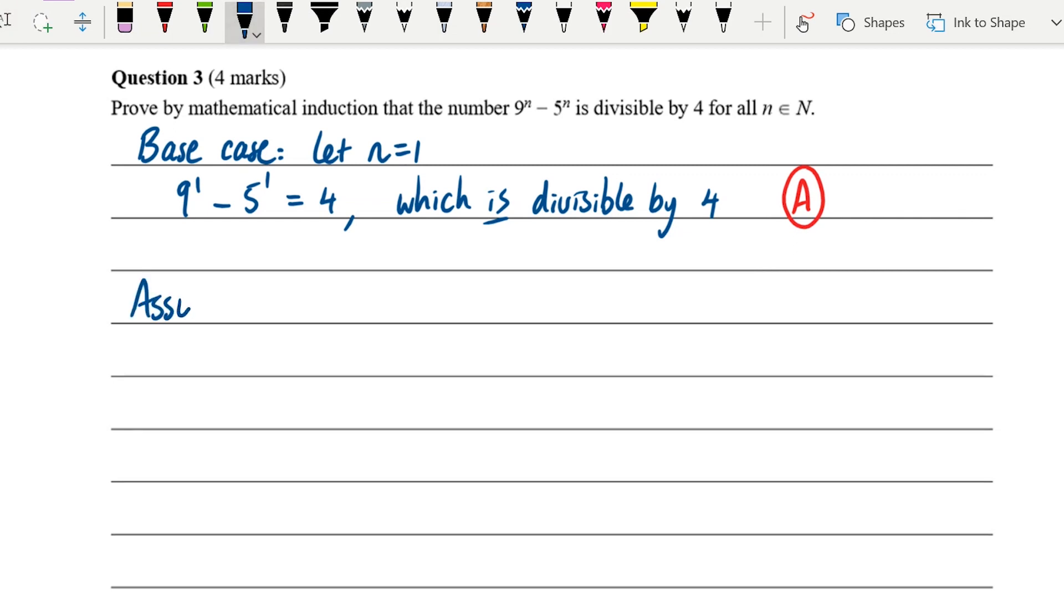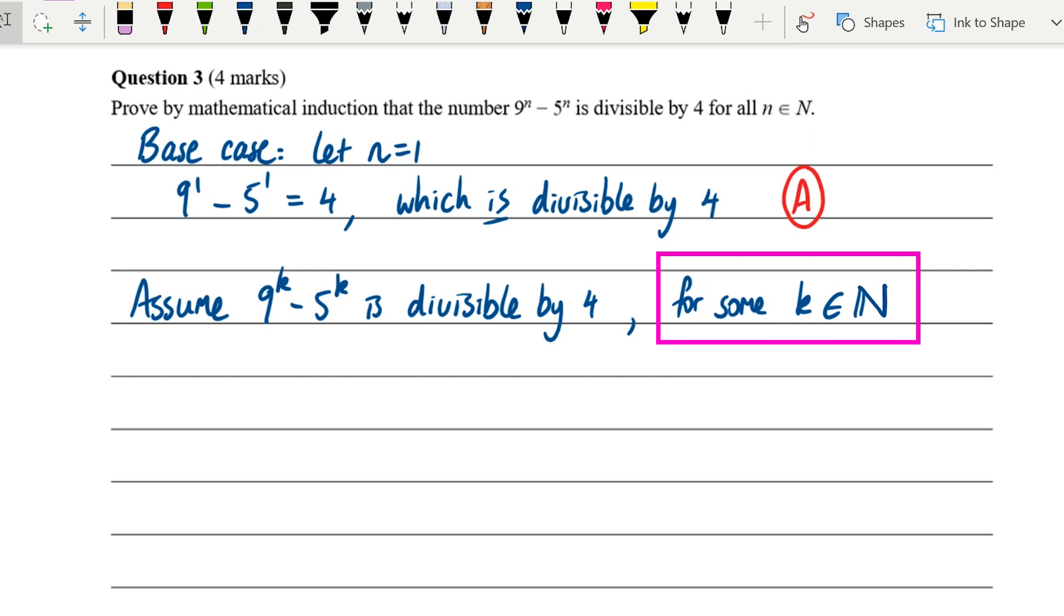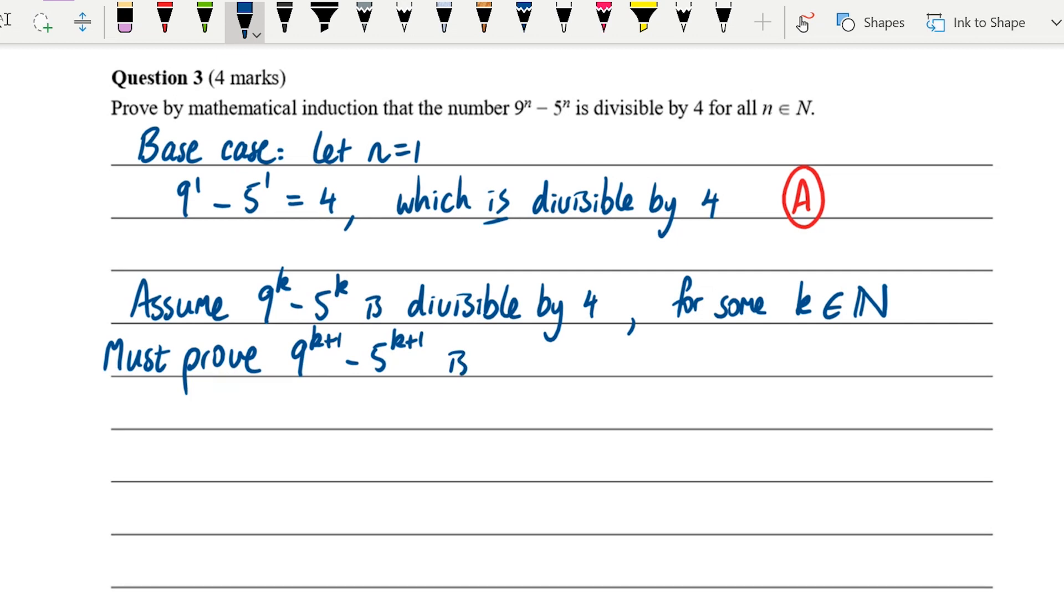With the assumption, we're going to assume that it's true for some value of n, which we'll call k. So 9 to the k minus 5 to the k is divisible by 4. We should say that that k value has to be some integer or in this case, some natural number. Then what we want to do is to prove for the next value of n: 9 to the k plus one minus 5 to the k plus one, that that should be divisible by 4. So that's what we need to prove.